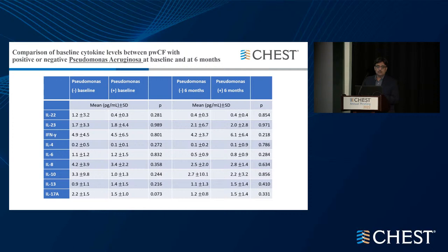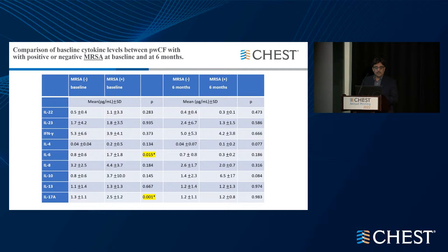When we looked at cytokines — including TH1, TH2, TH17, IL-17, and so on — among those colonized versus not colonized with Pseudomonas at baseline and at six months, there was no significant difference between the groups either at baseline or after six months of ETI therapy. Similarly, those who had MRSA colonization at baseline had higher IL-6 and IL-17A cytokine levels compared to those without MRSA colonization, but with six months of ETI/Trikafta therapy, that significance or difference was lost.